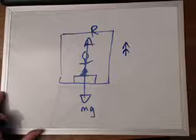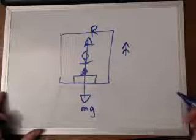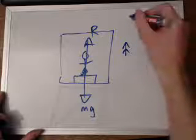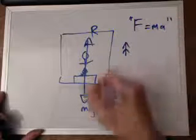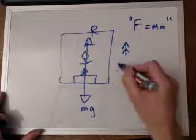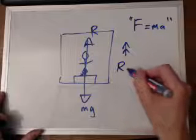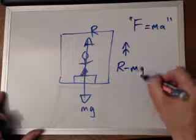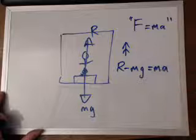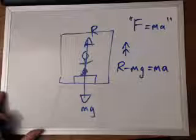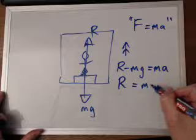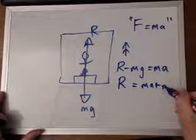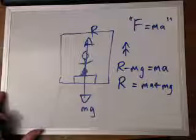So what changes? Well, the reaction force is greater than the weight. If you apply Newton's second law, which is resultant force equals mass times acceleration, you'll find that R minus mg equals mass times acceleration. So we get a formula: the reaction force R equals mass times acceleration plus mg, which is her weight.